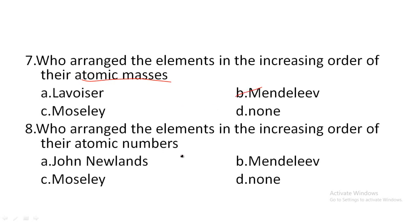Next one: who arranged the elements in the increasing order of atomic numbers? Option A: John Newlands, option B: Mendeleev, option C: Moseley, option D: none of the above. Based on atomic number, the elements in the periodic table are arranged by Moseley. Option C is the correct answer. Moseley is the scientist.